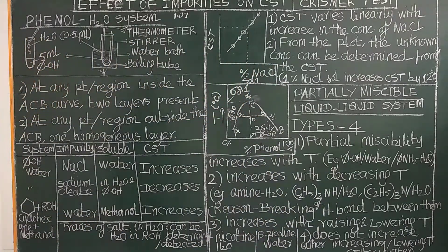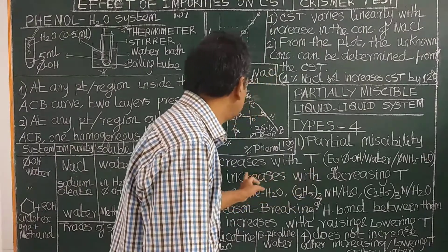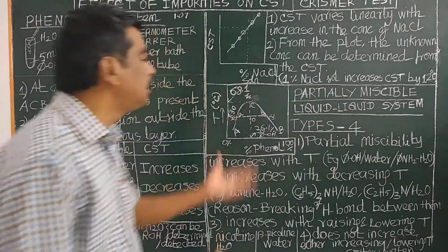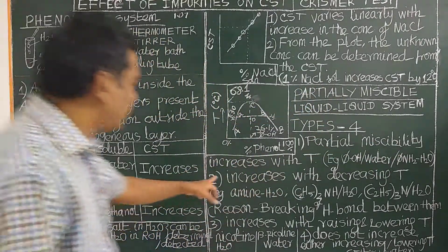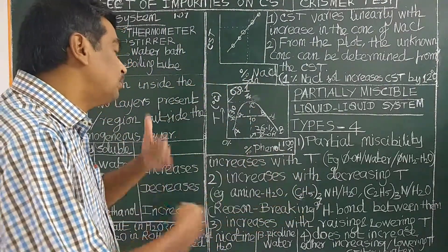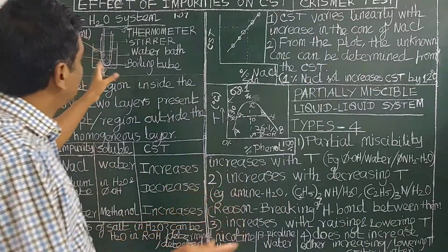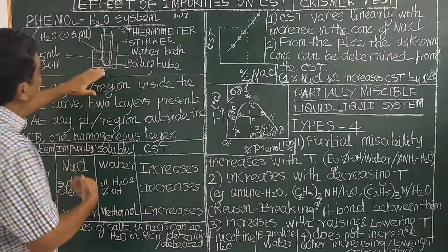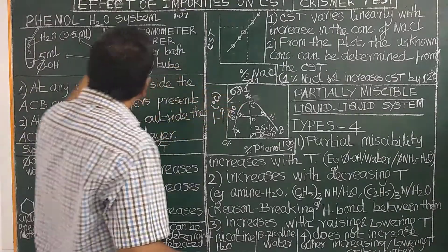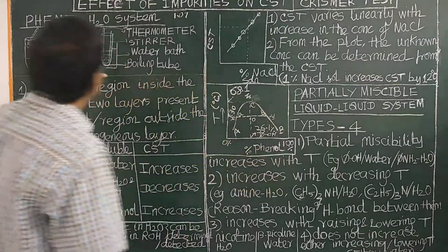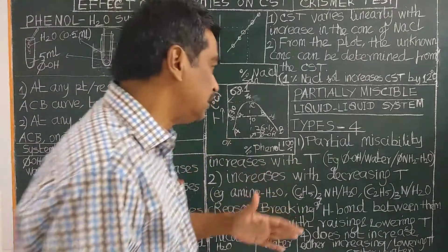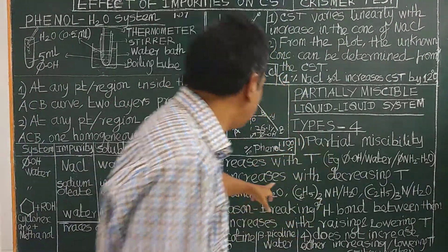Type 2 is the opposite: partial miscibility increases with decreasing temperature. Here, increasing temperature causes two layers to form. You need an ice bath to lower the temperature, and at a sufficiently low temperature it becomes one layer. This system has a lower CST, whereas Type 1 has an upper CST. Examples include diethylamine-water and triethylamine-water systems.